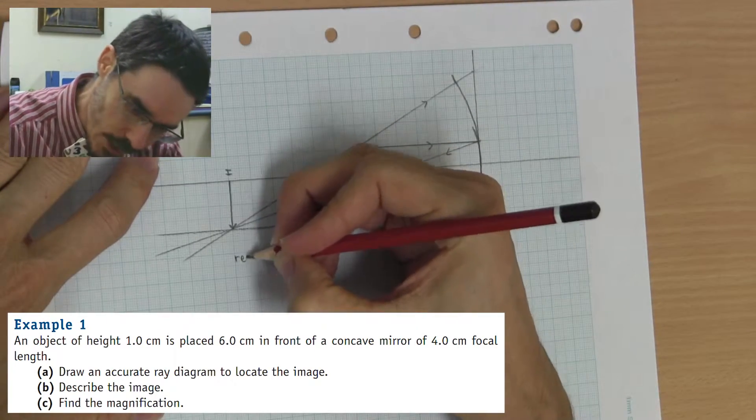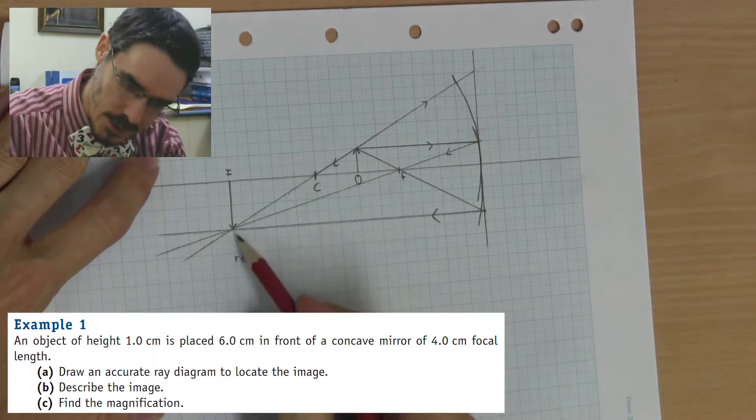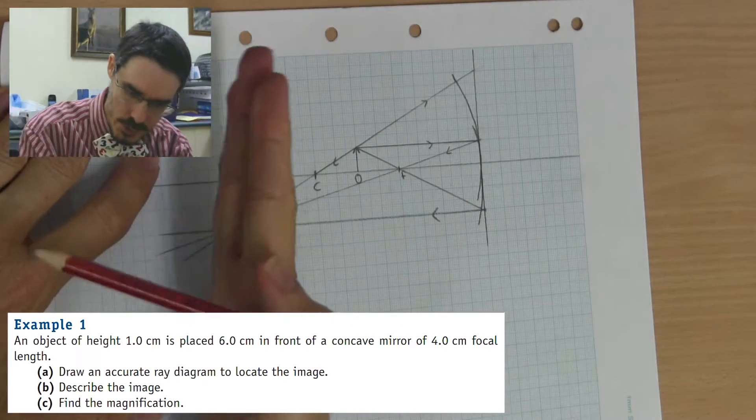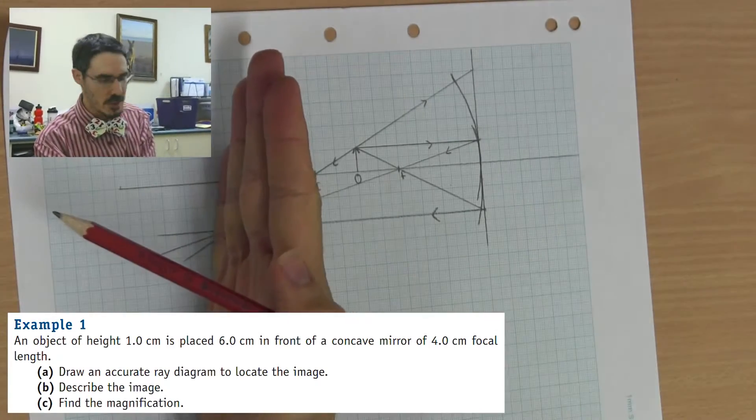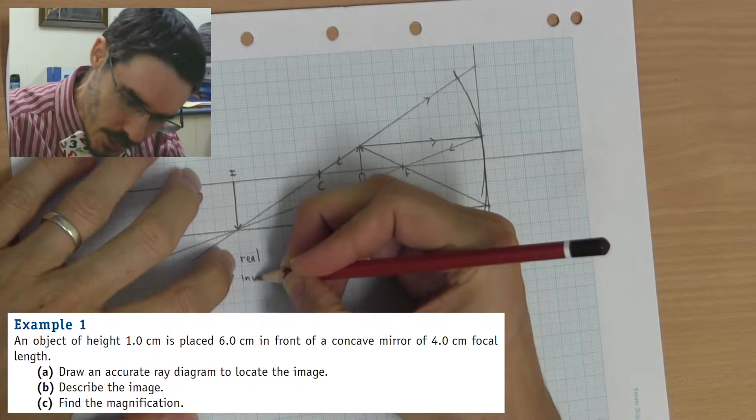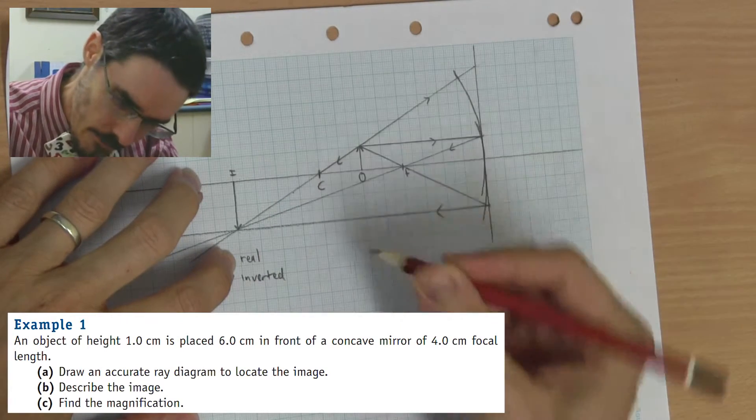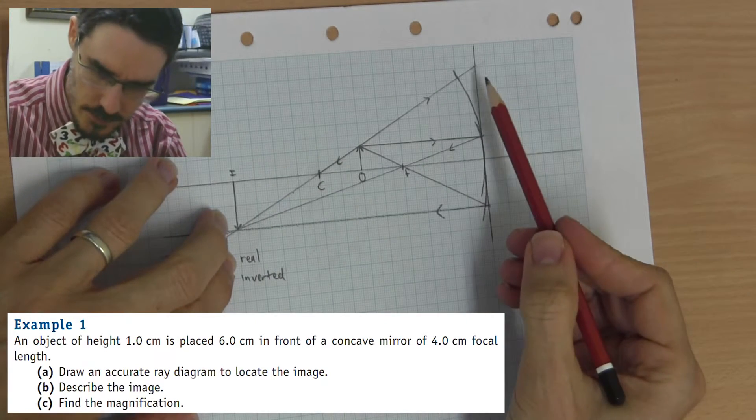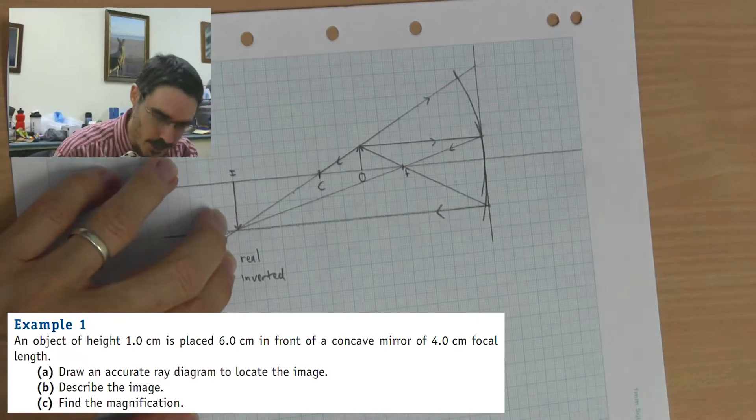The image is real. The light rays are actually travelling through the image. If I put a screen here, look on this side, I will see the image. It's real. It's inverted. The arrow turns out upside down.